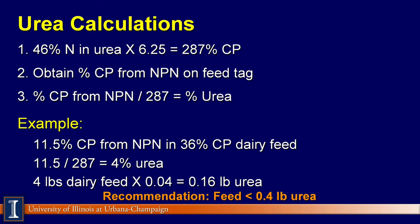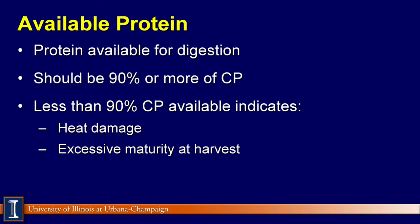No more than 0.4 pounds of urea should be fed per cow per day. Feeding urea to dairy cows has little or no benefit in diets that contain 16–18% crude protein.